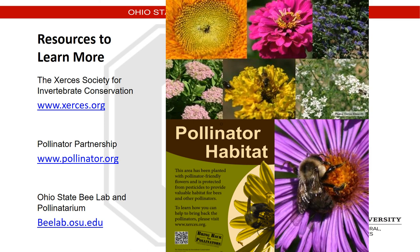There are a number of resources available on the internet to help individuals select plant material best for attracting pollinators, predators, and parasites — such as the Xerces Society, Pollinator Partnership, and the Ohio State Bee Lab and Pollinatarium at beelab.osu.edu. These can provide a lot of useful information for improving habitats for all three insect types of interest: pollinators, predators, and parasites.